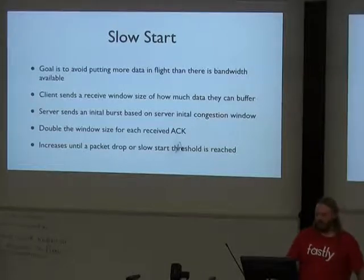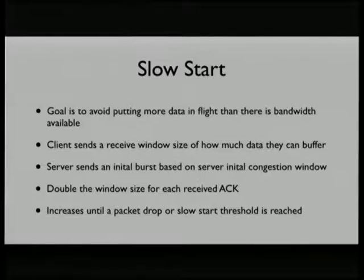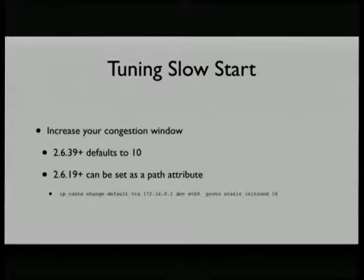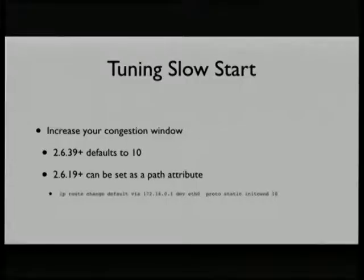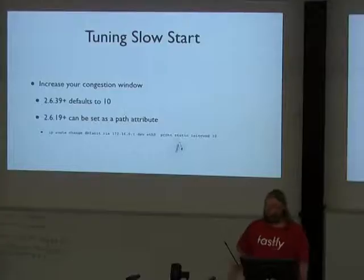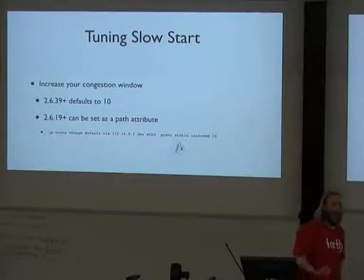Google did a lot of research on how big that initial burst should be. Historically the burst was three packets, which bounded how fast a connection would fill based on latency. For small HTTP request-response cycles, having to wait for slow start to build up really hurt. They proposed to the IETF raising the default to 10. If you're running kernel 2.6.39 or newer, you're already there. This is set as a path metric in the kernel, so you set it on the default route and it just applies — or you can override it for specific users.